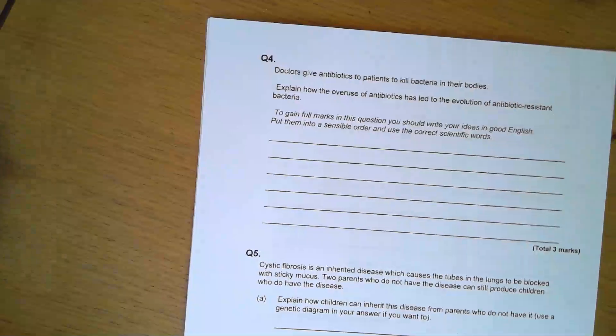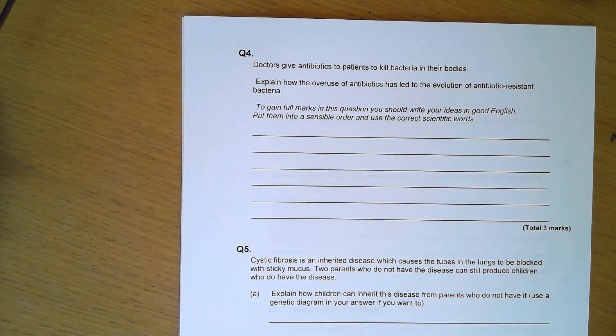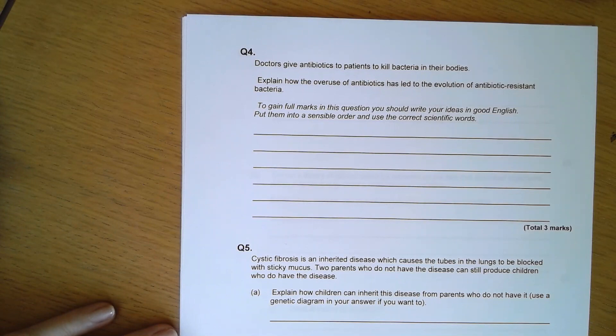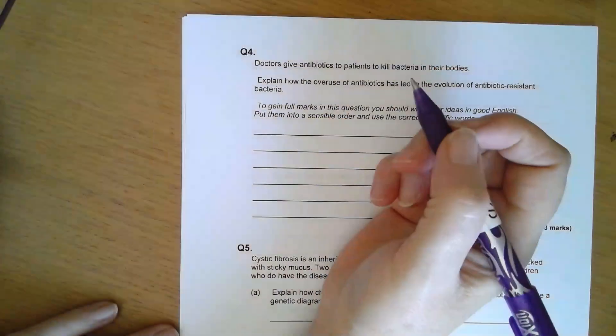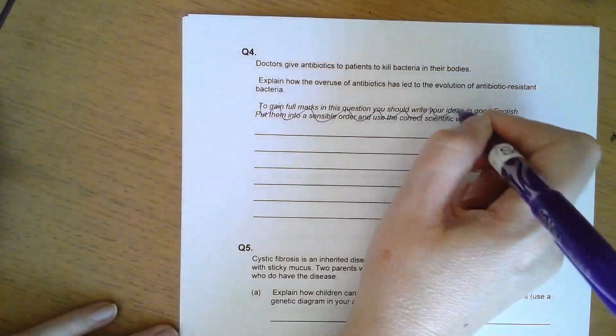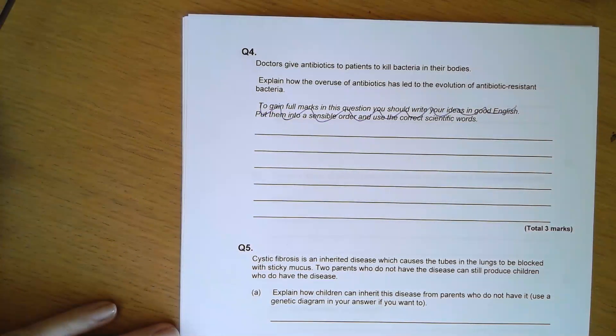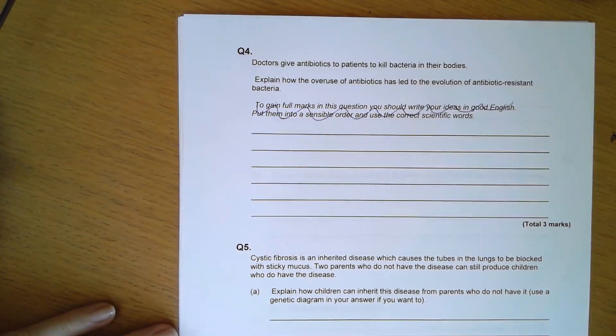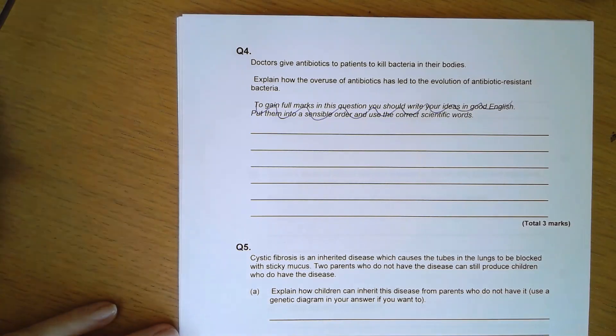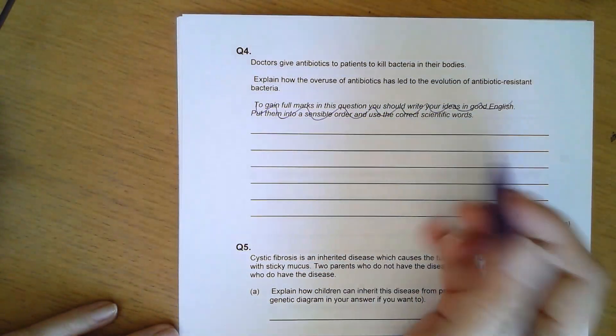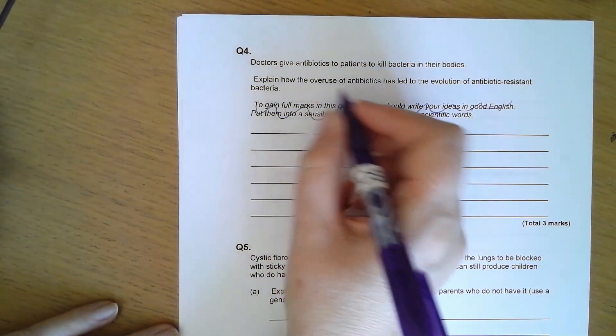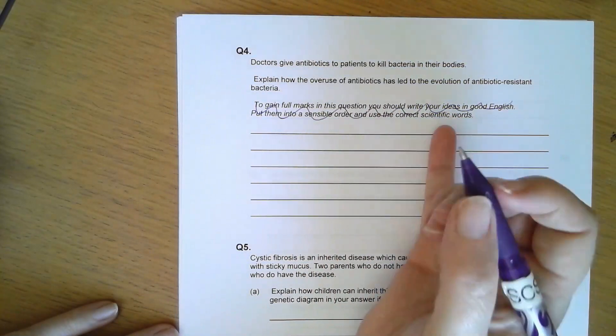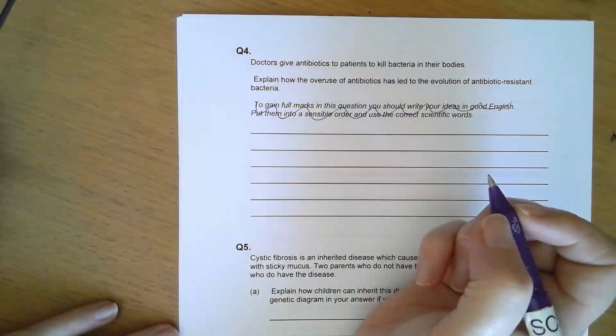Question four. Doctors give antibiotics to patients to kill bacteria in their bodies. Explain how the overuse of antibiotics has led to evolution of antibiotic resistant bacteria. I always try to make sure that answers are logically sequenced.